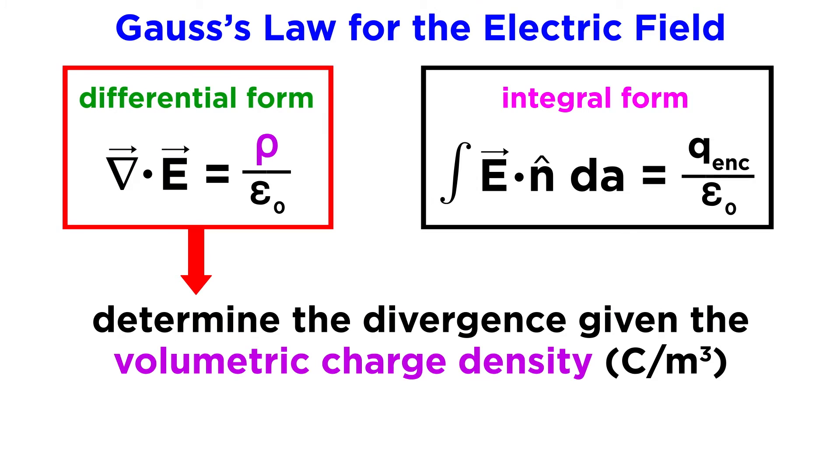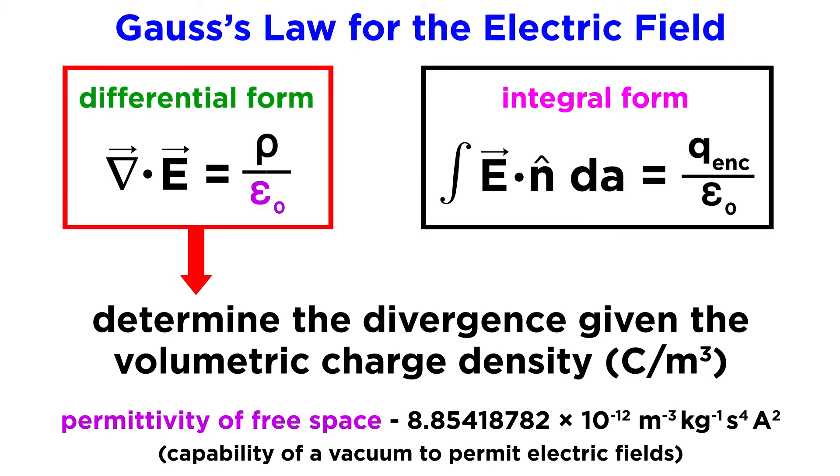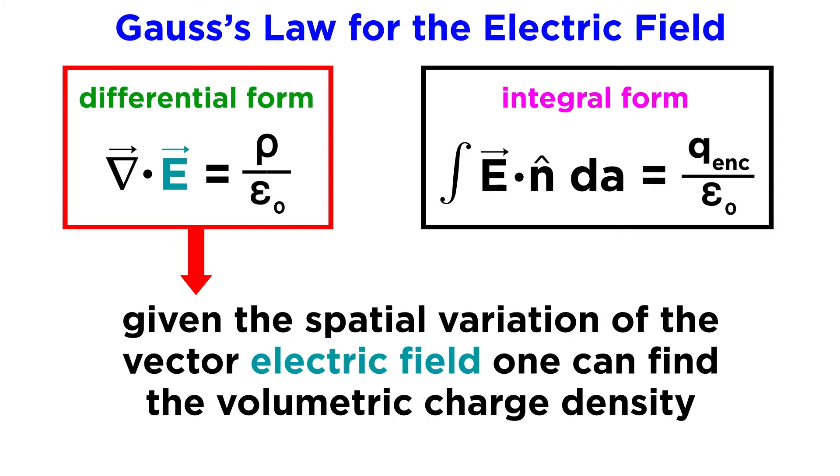This form is used to determine the divergence of an electric field at a particular point, if the volumetric charge density, rho, is known, meaning the quantity of charge per unit volume, measured in coulombs per cubic meter. Epsilon naught is a constant representing the permittivity of free space, or the capability of a vacuum to permit electric fields. Conversely, if the spatial variation of the vector electric field is known, the differential form allows us to find the volumetric charge density at a particular point.